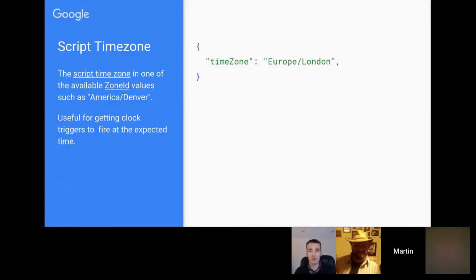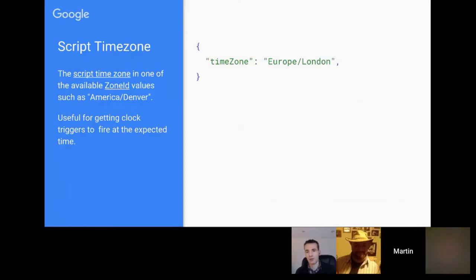Something that often catches people out is that if you've got a container-bound script, the time zone can be set both in the spreadsheet and in the script — or in whichever document your script is bound to. This can cause confusion because you can end up with different time zones: one for the script and one for the container-bound application.